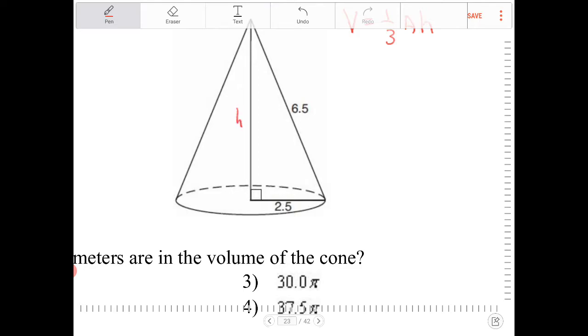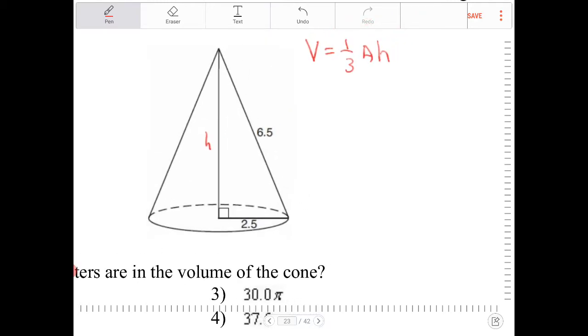So it just so happens that the line is already drawn for us, and it's indicating that that line is perpendicular to the base, and it's a right triangle. So I can say h squared plus 2.5 squared is equal to 6.5 squared.